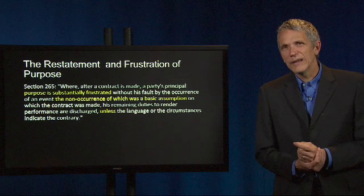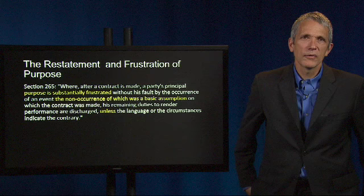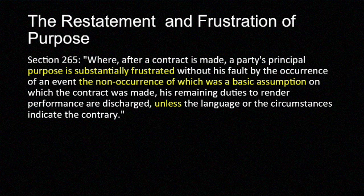The reasoning relied upon by the court in Krell v. Henry has come to be known as the frustration of purpose doctrine. Section 265 of the Restatement describes the doctrine as follows: where, after a contract is made, a party's principal purpose is substantially frustrated, without his fault, by the occurrence of an event, the non-occurrence of which was a basic assumption on which the contract was made, his remaining duties to render performance are discharged unless the language or circumstances indicate the contrary.